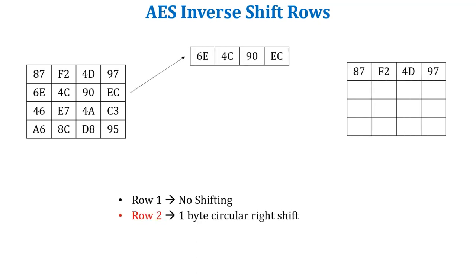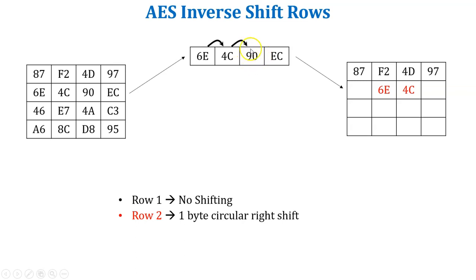Next rule is row two performs one byte circular right shift. Let's start with the first value of the row, 6E. It performs one byte circular right shift and moves to the second position of the row. Then next value is 4C — it again performs the circular right shift and moves to the third position of the row. Next value is 90 — it performs the one byte circular right shift and moves to the first position of the row.